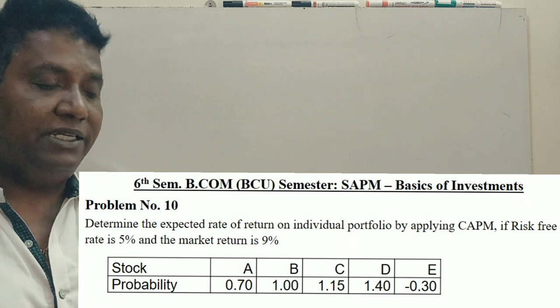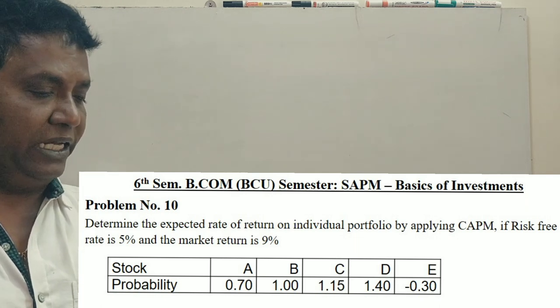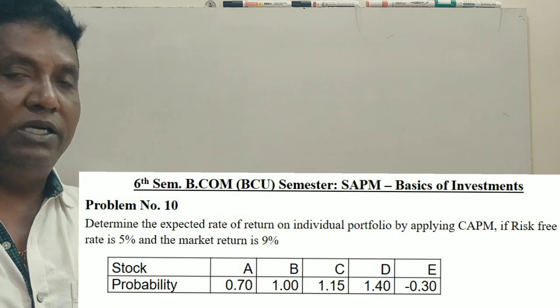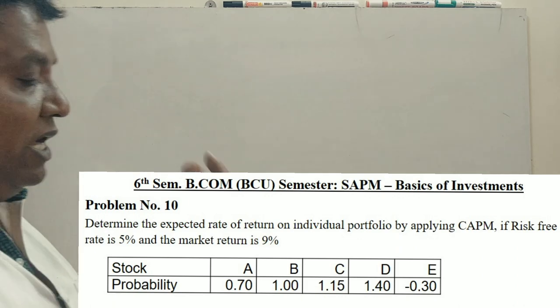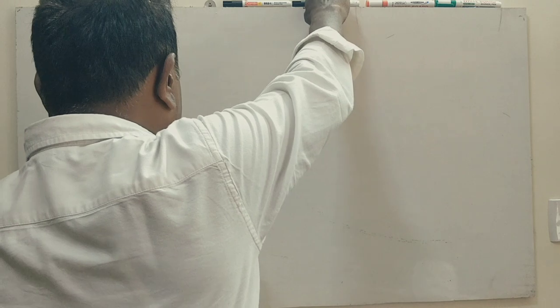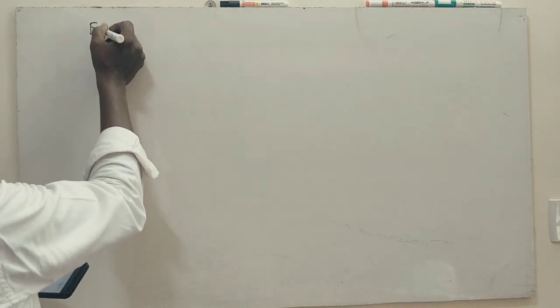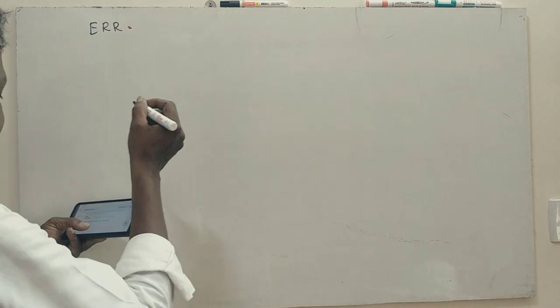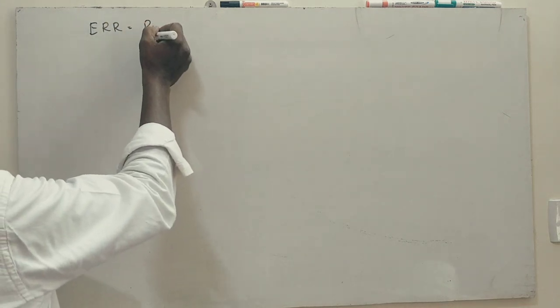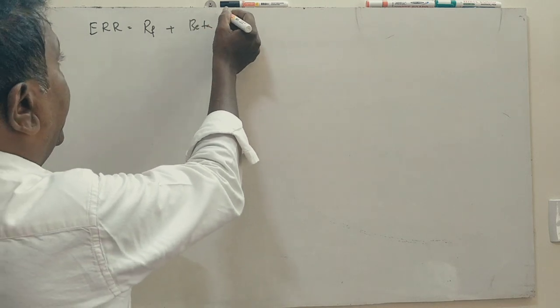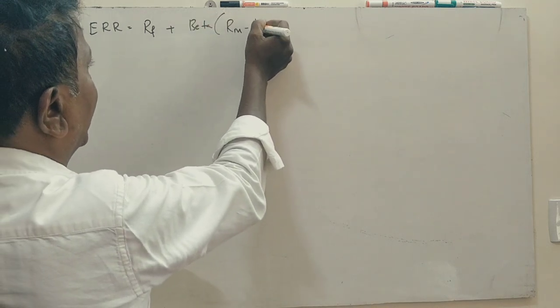Stock A, B, C, D, E, probability. So, solution: expected rate of return is equal to risk-free return plus beta. Available same formula. Expected rate of return equals risk-free plus beta into RM minus RF.